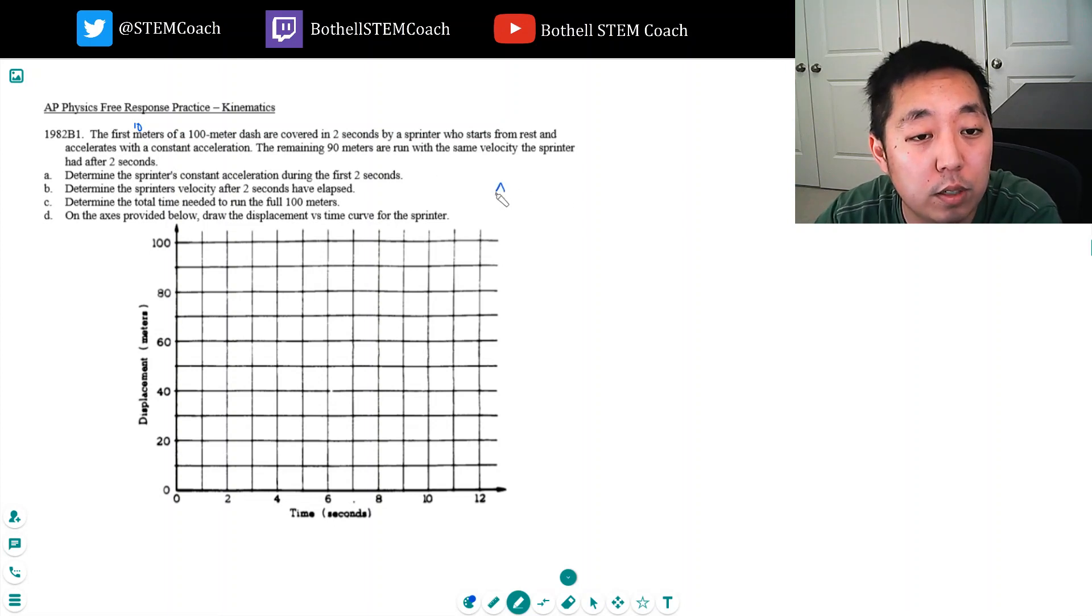What I know is delta x is two meters. I'm trying to find a, which is what I want to solve for. I don't know the velocity, but I know time is two seconds. So I'm going to use this equation: v0t plus one half at squared.